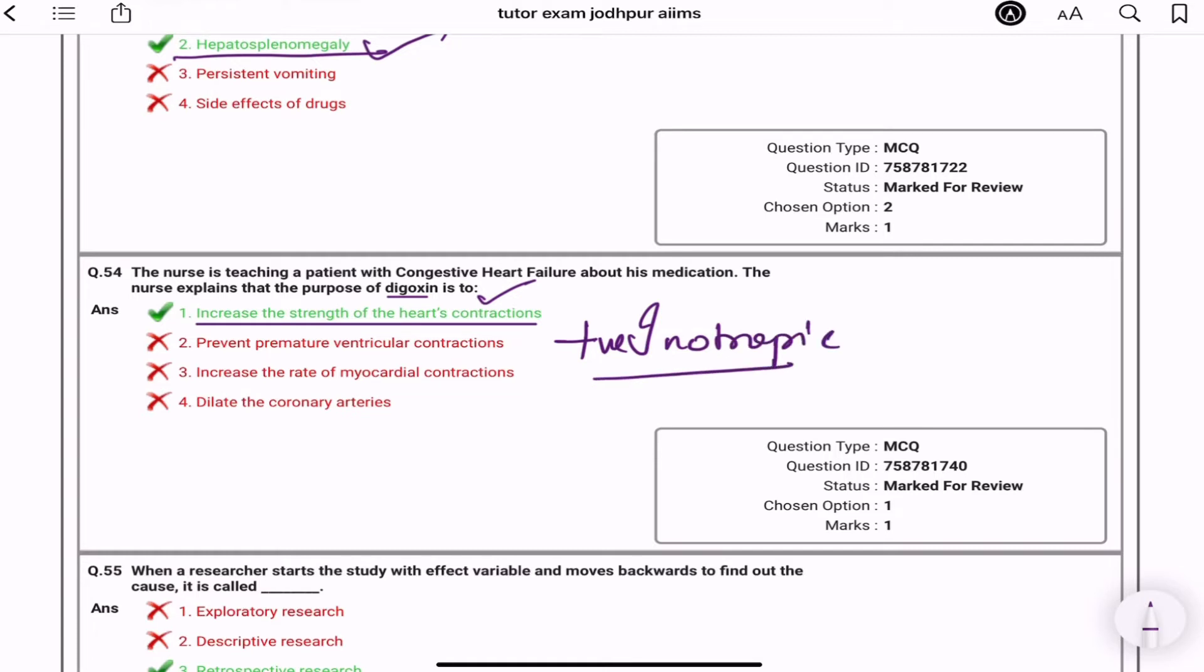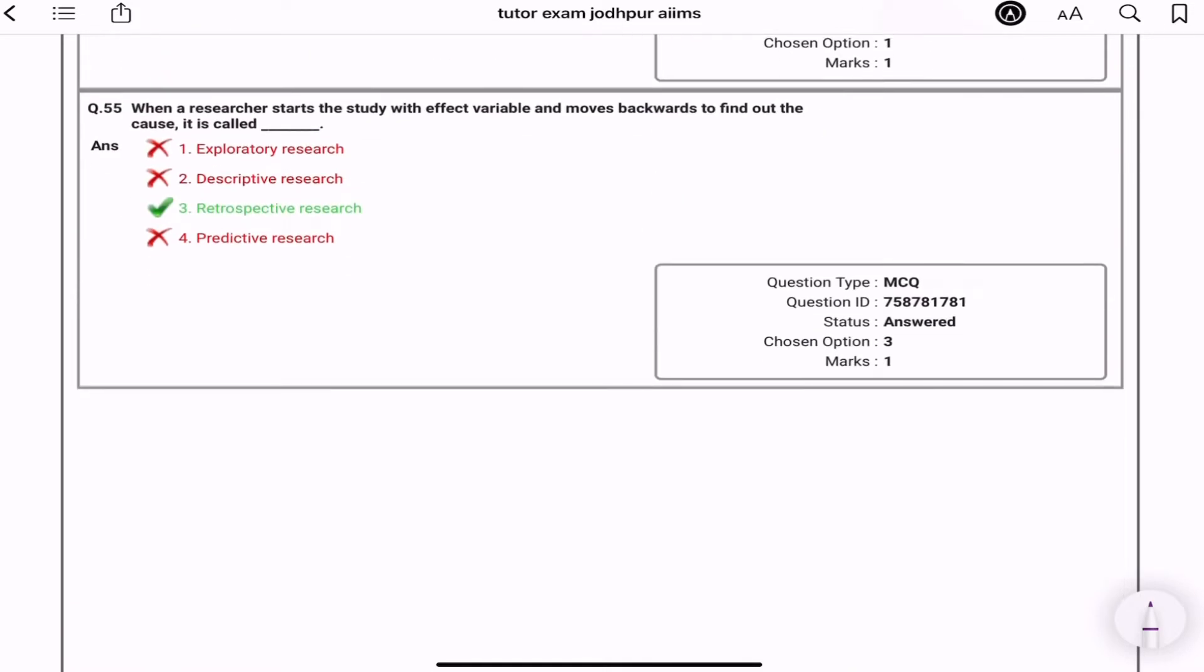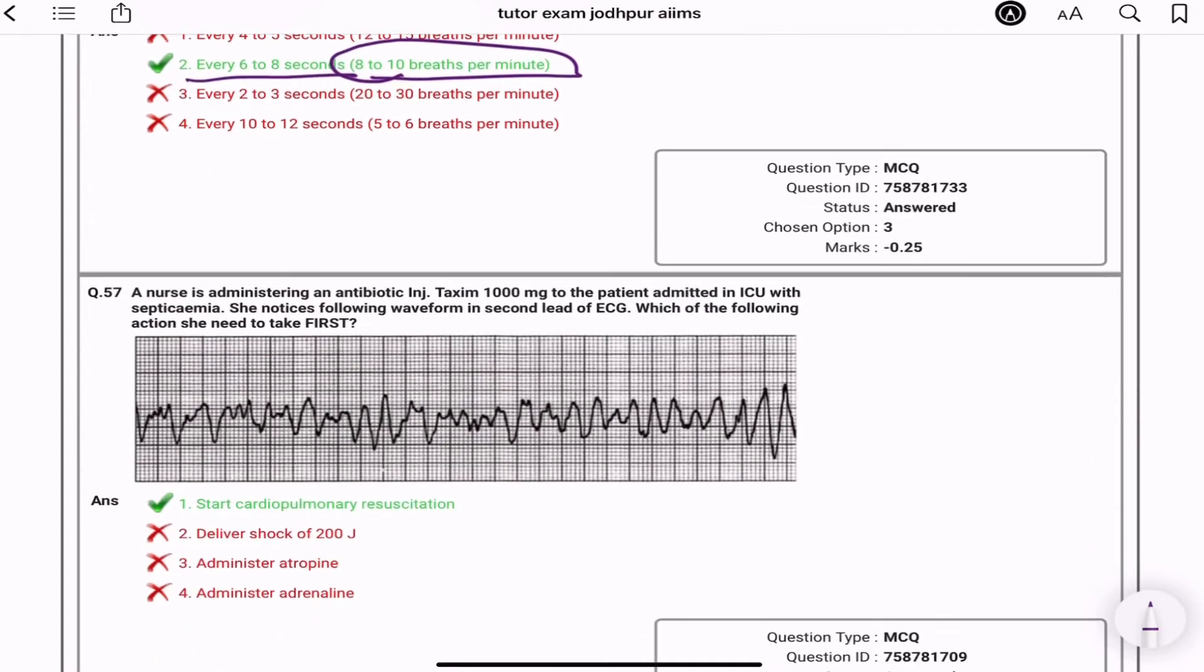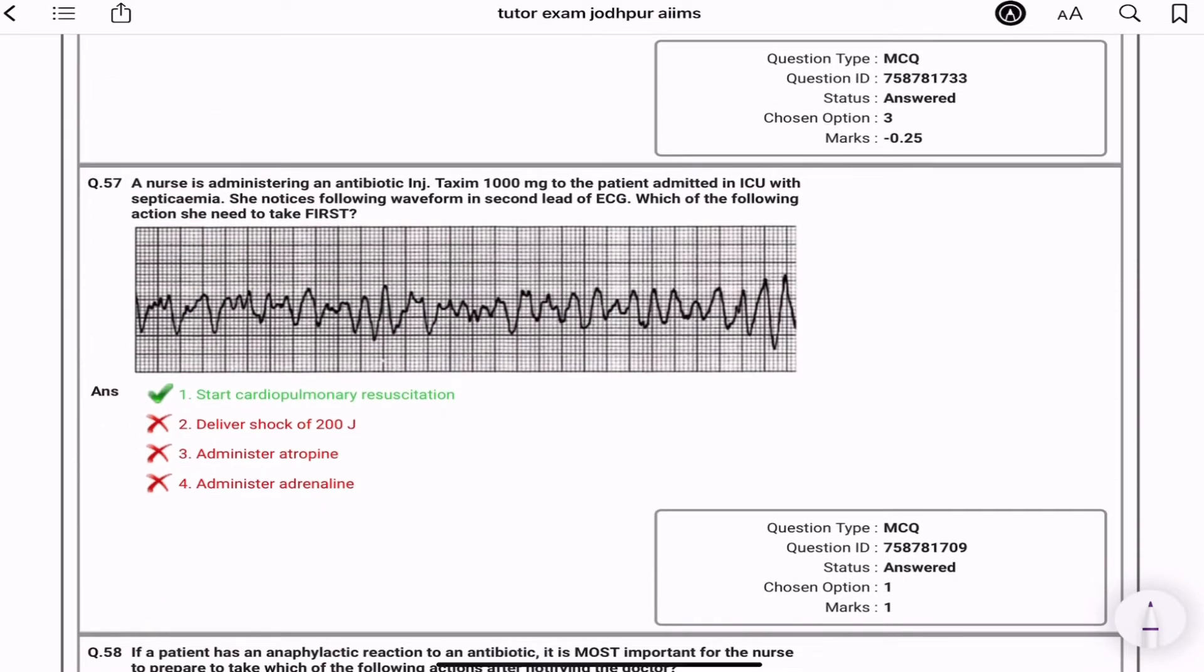When a researcher start the study with effect variable and move backward to find out the cause, it is called retrospective research. In an adult with an advanced airway in place during two rescue CPR, that means how often should the breath be administered? Every six to eight seconds, that is eight to ten breaths per minute. Then this graph diya tha. This graph in this graph me poocha tha ki aapne kya kiya hai. Taxim de diya sab. Matlab hi tak. Sara jo poocha aapko time waste kiya. Yaha picture de di, kya karna hai. This picture ko dekke CPR start karna hai.